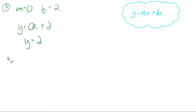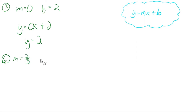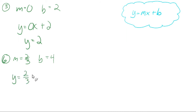Number six is very similar. m equals two-thirds, the slope is two-thirds, and the y-intercept is four. So y equals two-thirds x plus four.